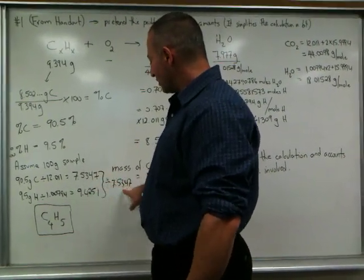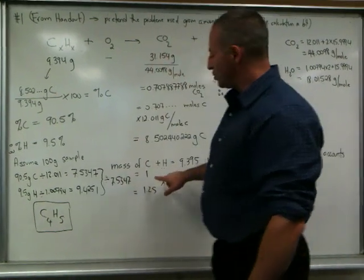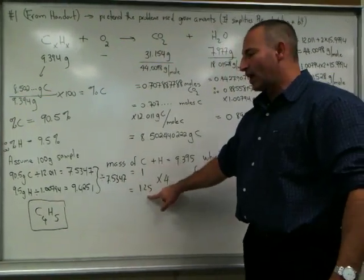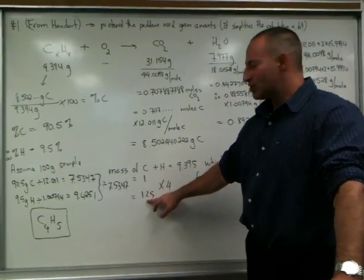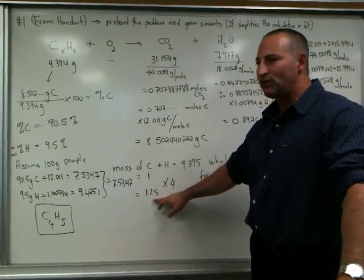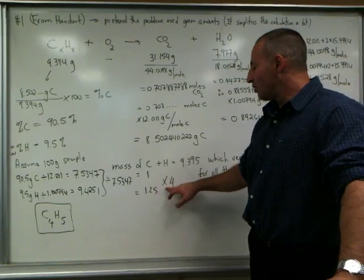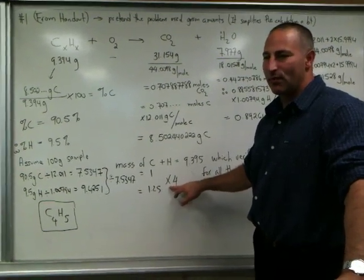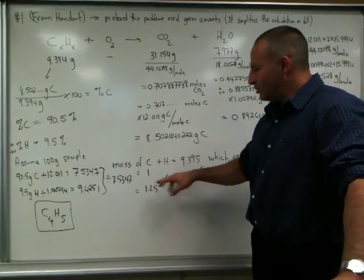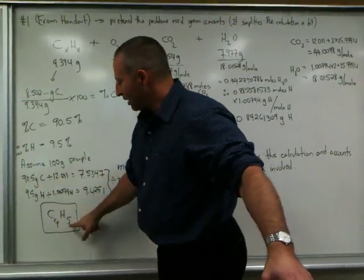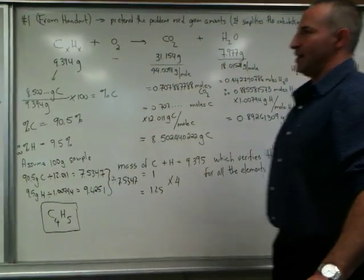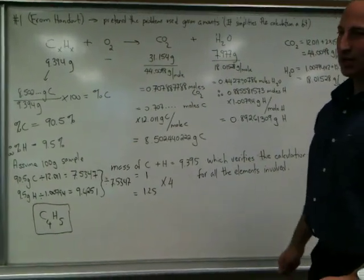Out of these two numbers you pick the lower one, divide by the lower number and you get a ratio: 1 to 1.25. Of course it's impossible to have a quarter atom in an empirical formula. So what that suggests is 0.25 suggests that you should multiply the empirical formula by 4. And you will get whole number values. So the empirical formula we get is C4H5 based on this data. And that is combustion analysis.